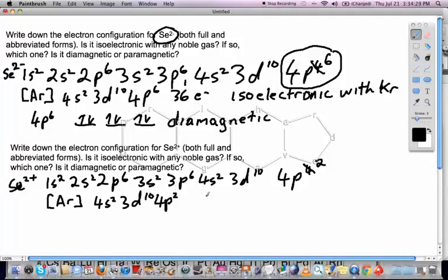Is it isoelectronic with any noble gas? The answer is no, because this would be 18 plus 2 is 20, plus 10 is 30, and that's 32. So it's not isoelectronic with any noble gas. No noble gas has 32 electrons.